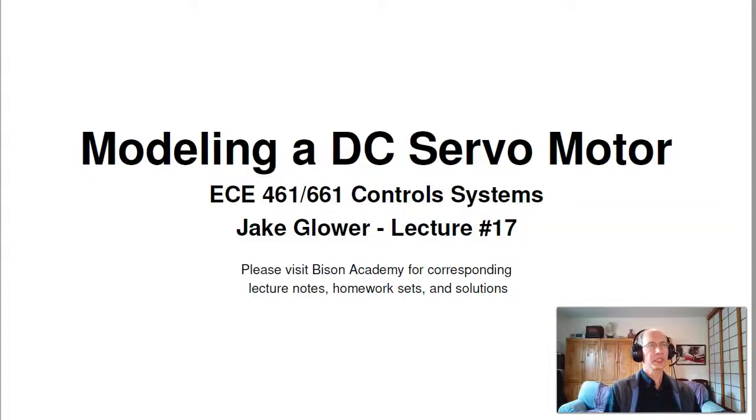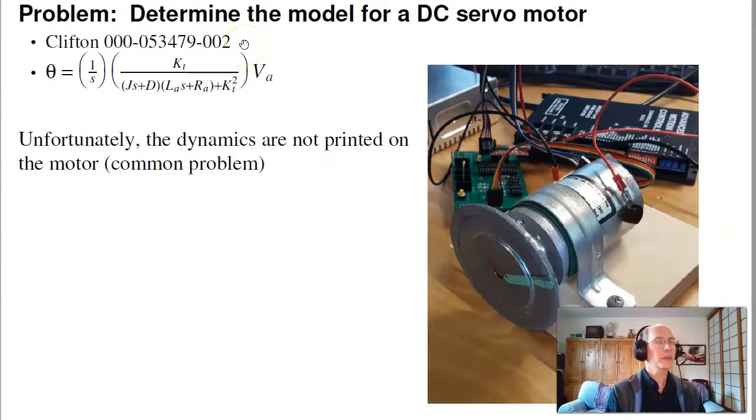Welcome to lecture number 17 for ECE461 Control Systems, Modeling a DC Servo Motor. The problem we're looking at is to come up with a dynamic model for a specific DC motor, the Clifton 53479-002 servo motor. Like we did in our last lecture, the model for a servo motor in general is in this form. If we want to control angle, it's 1 over s times a second order system. If we want to control speed, derivative of angle is speed, and you have a second order system.